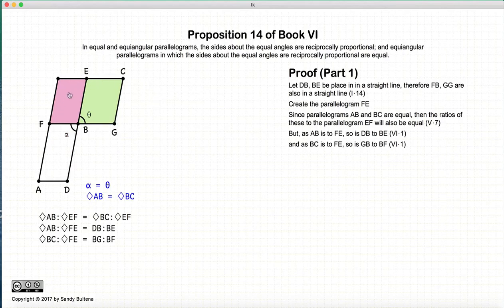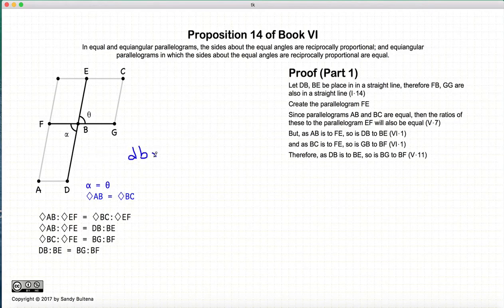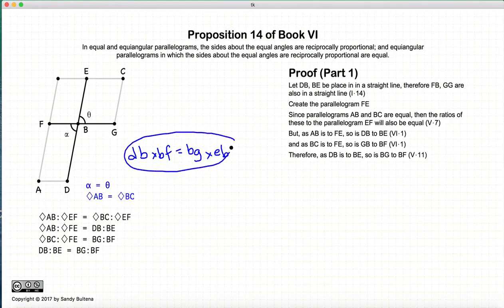This follows from Proposition 1 of Book 6: if two parallelograms share two parallel lines, then the areas are proportional to their bases. So the areas of AB to FE equal the lengths of their bases DB and BE. Similarly, since EF and CB share two parallel lines, the ratio of area BC to FE equals the ratio of their bases BG to FB. Now AB to FE equals DB to BE, and AB to FE also equals BC to EF, so by Proposition 11 of Book 5, DB to BE equals BG to BF — meaning DB times BF equals BG times EB, which is reciprocally proportional.